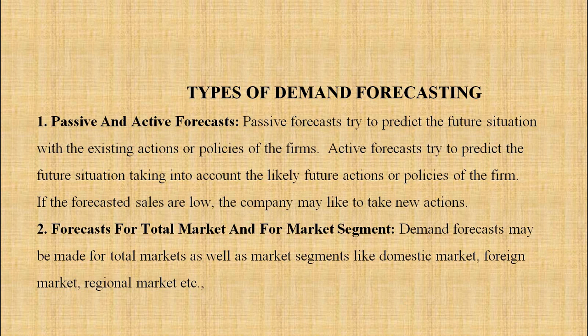Passive and active forecast. Passive forecast tries to predict the future situation with the existing actions or policies of the firm. Active forecast tries to predict the future situation taking into account the likely future actions or policies of the firm. If the forecasted sales are low, the company may like to take new actions.